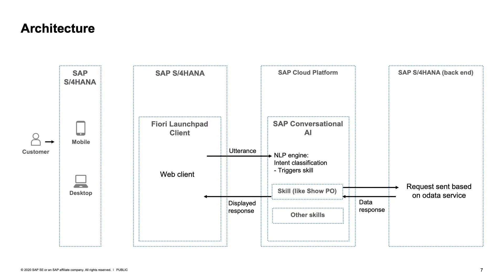This utterance is then sent to SAP Conversational AI, directly to the NLP engine — the natural language processing engine. Intent classification and entity detection happen. While sending this utterance, we use SSO propagation, which is single sign-on authentication of the end-user. Based on this intent classification and entity detection, the specific skill defined beforehand is triggered. This skill — for example, 'show me purchase orders' — is sent to the SAP S4HANA backend via an OData service request, which sends a data response back to SAP Conversational AI.